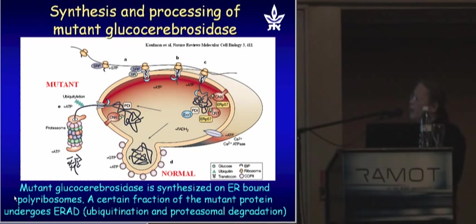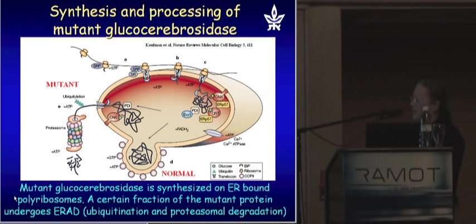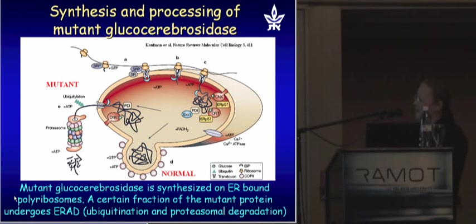What do we know about the normal enzyme and the mutant enzyme? The normal enzyme is synthesized on ER-bound polyribosomes, enters the ER, and if it is recognized by the ER quality control mechanism — the ERQC — which is made of proteins known as chaperones, and if it is recognized as normally folded, then it leaves the ER toward the Golgi, from where it is trafficked to the lysosomes.